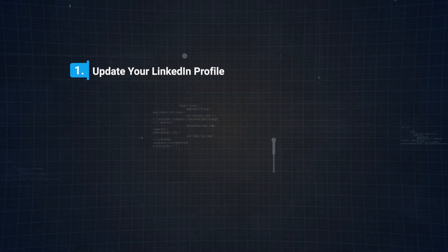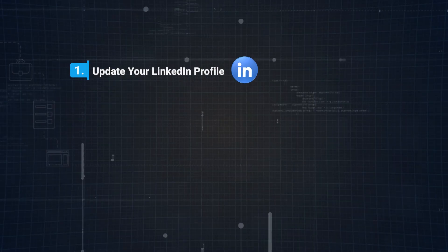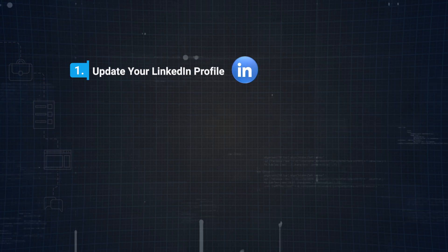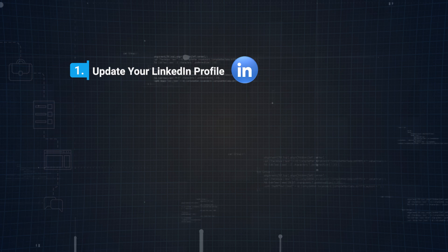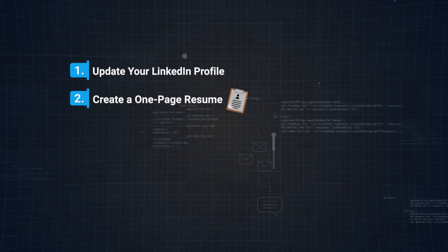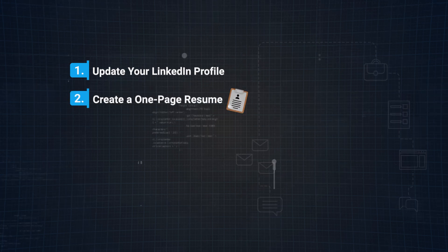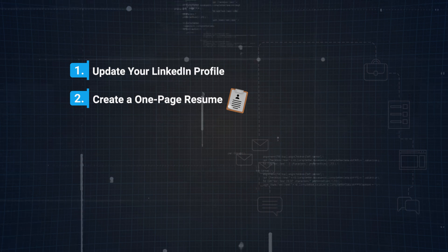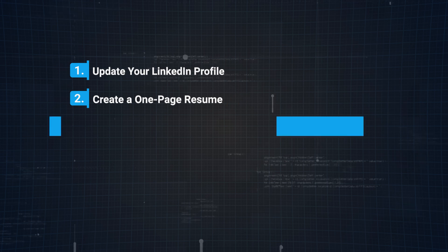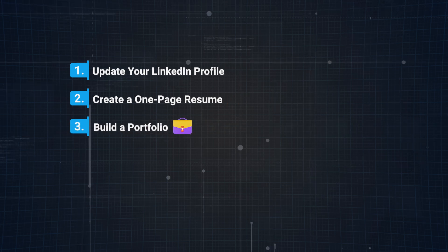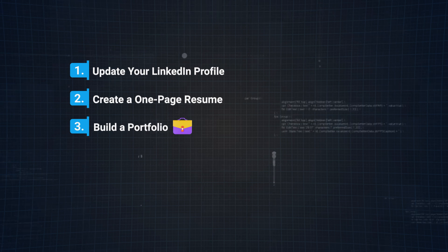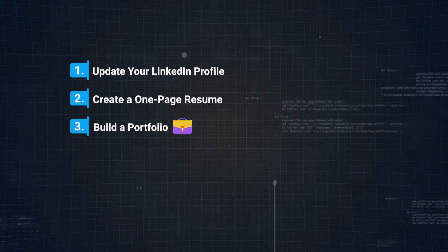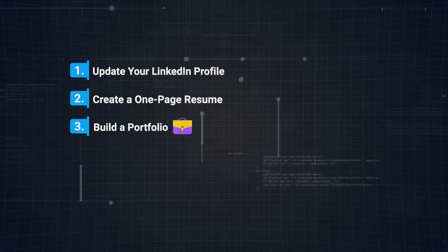Number one, update your LinkedIn profile. Ensure your LinkedIn profile looks professional and is up to date. Potential employers often check LinkedIn even if you don't use it to apply for jobs, so make sure it looks the part. Number two, create a one-page resume. Make a concise one-page resume that follows basic best practices. While it won't get you the job on its own, you'll need it for applications. Number three, build a portfolio. Companies want proof that you can do the work, so it's crucial to have a portfolio of projects you've completed. Include projects that showcase your skills in data collection, cleaning, analysis, and visualization.